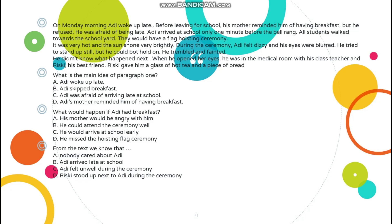Dari kalimat pertama, kalian bisa melihat: Adi woke up late. Bangun terlambat. Berarti itu sad story — merupakan kalimat pengalaman yang menyedihkan. Dari teks itu, kalian harus bisa mengetahui tujuan penulis menulis cerita itu apa, kemudian kesimpulannya apa. For example, what is the main idea of paragraph 1? Apa ide dari paragraf 1? Biasanya paragraf 1 itu ada inti dari awal mula sebuah cerita, atau orientation.